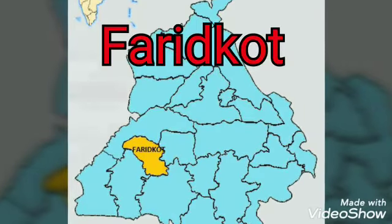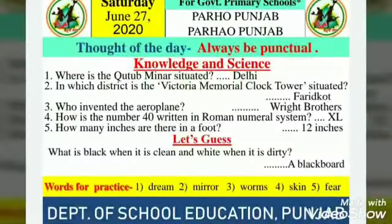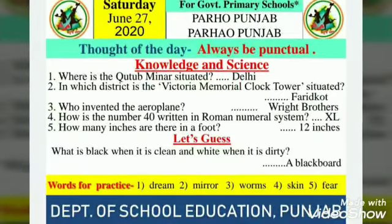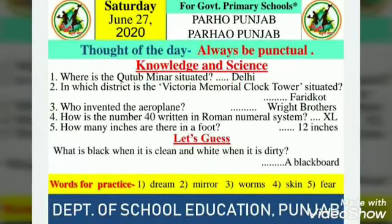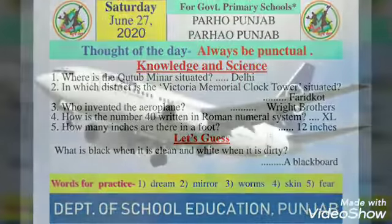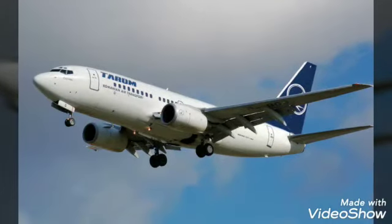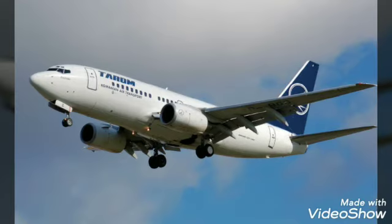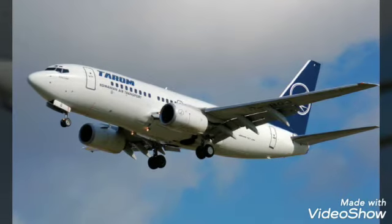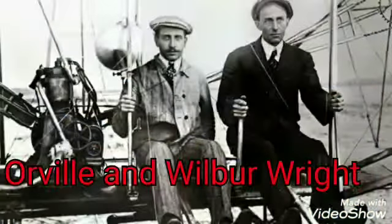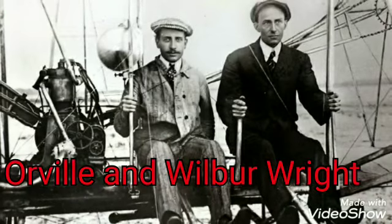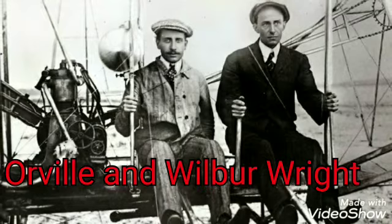Now the third question: who invented the aeroplane? I hope you all have seen the outside view of an aeroplane. The aeroplane was invented by the Wright brothers — two American brothers named Orville Wright and Wilbur Wright. They both were brothers and they invented the aeroplane.